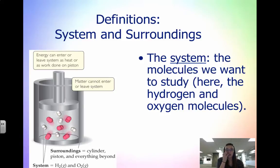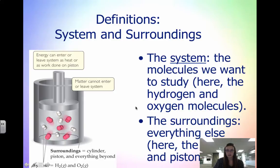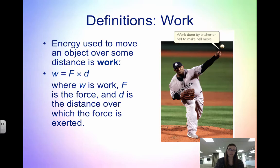When focusing on energy, we define the system and the surroundings. The system is what we want to study — in this diagram it's the molecules inside the piston, the hydrogen and oxygen molecules. The surroundings is everything else. This is an example of a closed system because nothing can enter or leave due to the lid — the cylinder and piston create a closed system. If there were no lid, that would be an open system where matter could come in or leave.